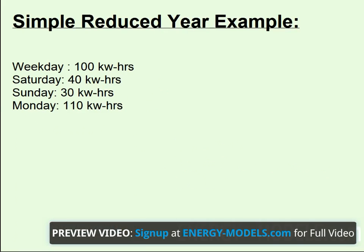If we do a sample calculation, and say that Trace ran through four days: on a weekday it calculated 100 kWh, on a Saturday 40 kWh, 30 kWh on Sunday, and 110 kWh on Monday — because it had to make up for the drift points that it fell to over the course of the weekend. That is why Monday is calculated separately from weekdays, because in a typical building...